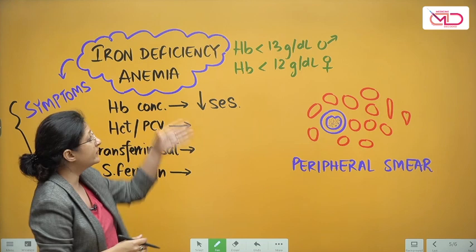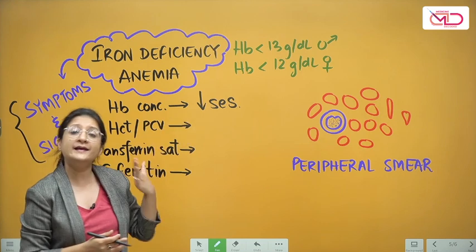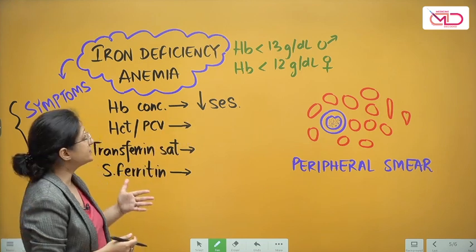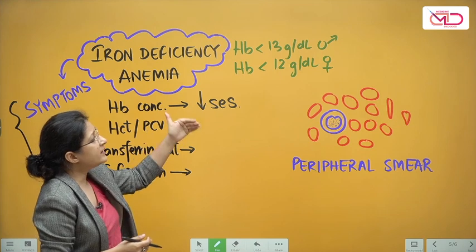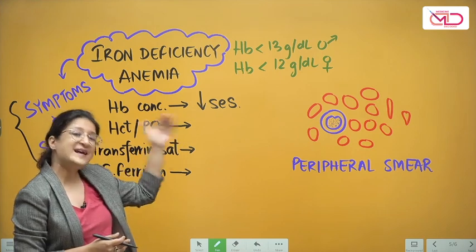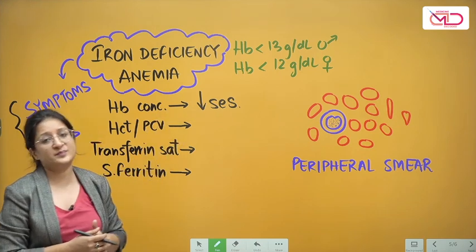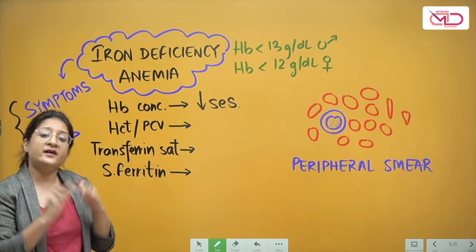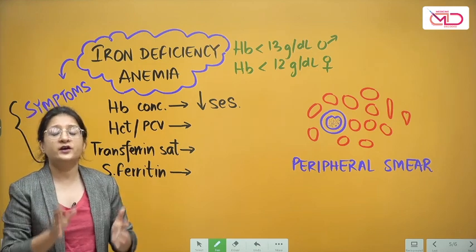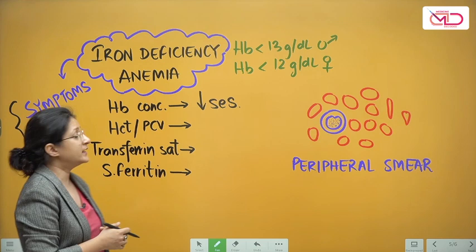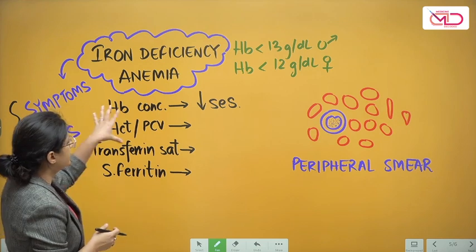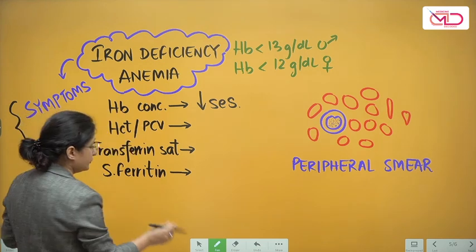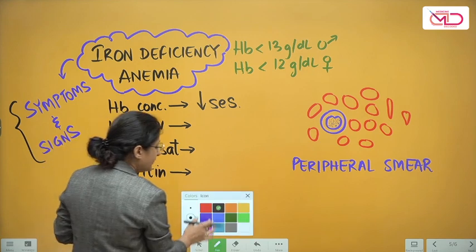The hemoglobin concentration will now start to fall. In males, hemoglobin less than 13 g/dL is iron deficiency anemia; in females, hemoglobin less than 12 g/dL is anemia. There are various causes of anemia, but in this video we are considering iron deficiency anemia particularly.